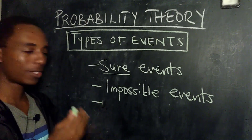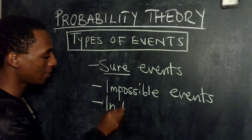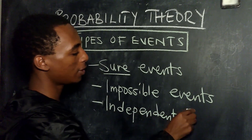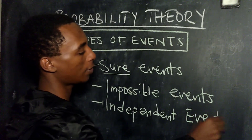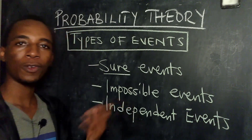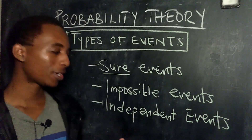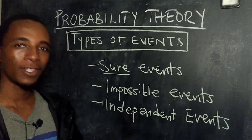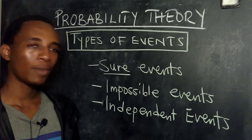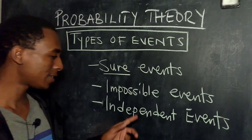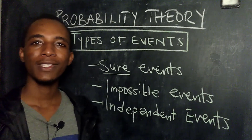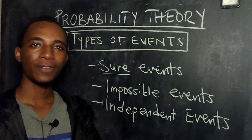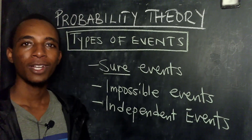Those are the simpler kinds of events, so let's move ahead and talk about more interesting events — independent events. This is important because a lot of numerical examples will involve independent events. So what do we mean by independent events? As the name suggests, these are events where the occurrence of one event does not affect the occurrence of the other.